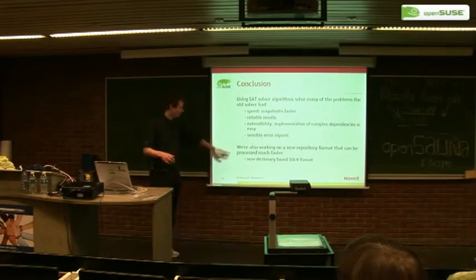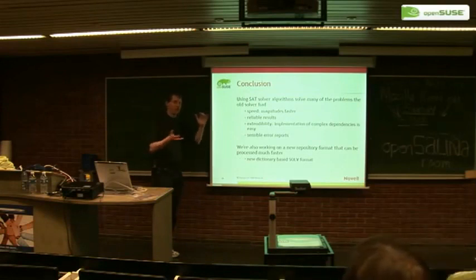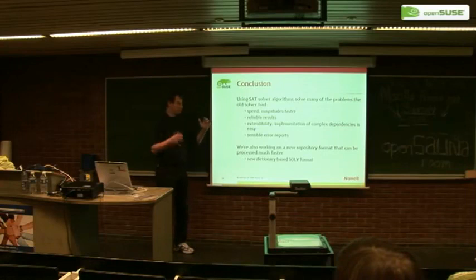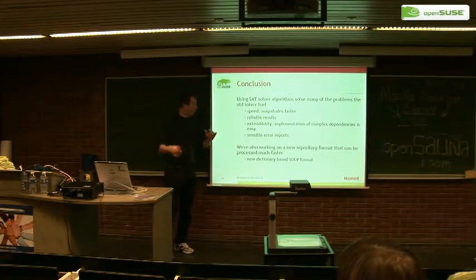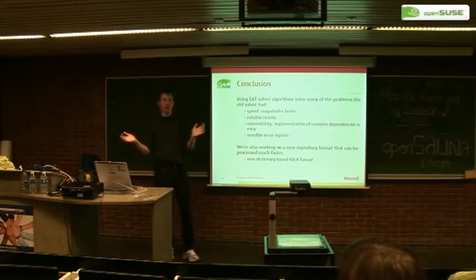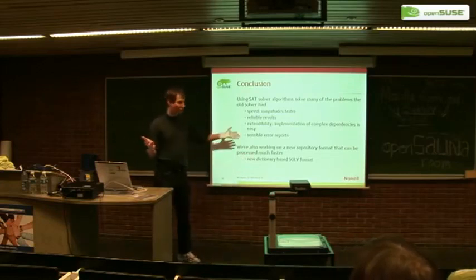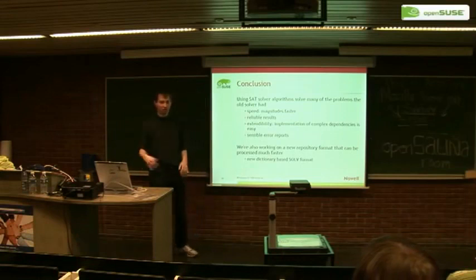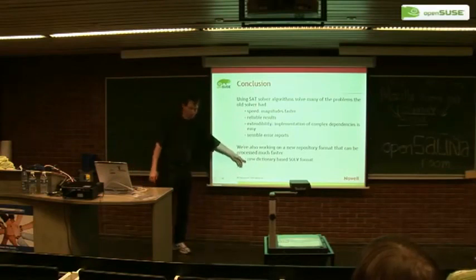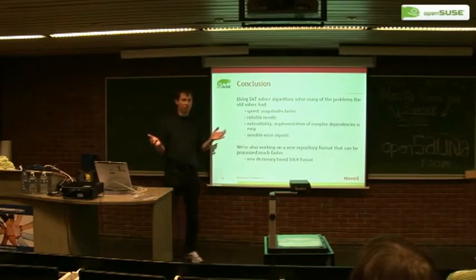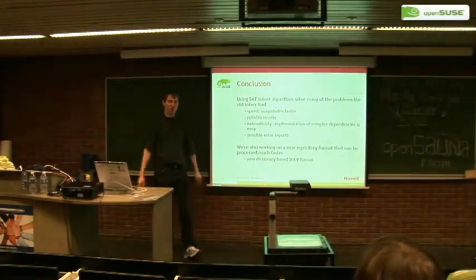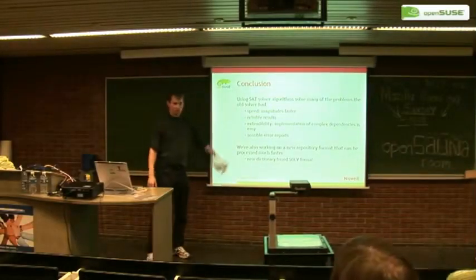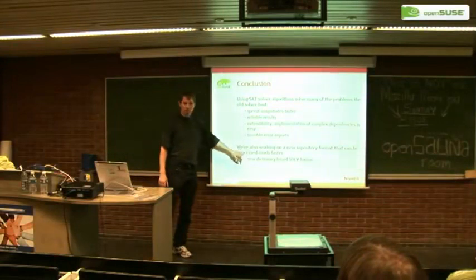The trick is that this new format is dictionary-based — we first have a string space at the front of the file where we define all the strings and assign integers to them. All the dependency lists are then just lists of integers. This is good because integers can fit in 32 bits even on 64-bit systems, and with pointers for strings you'd always need 64 bits. So solving doesn't take more memory on a 64-bit machine. And string comparison with the dictionary gets unified — if the integers are the same, the strings are the same. This is really what makes the new libzypp so fast.